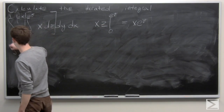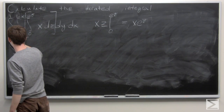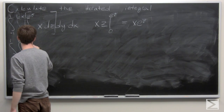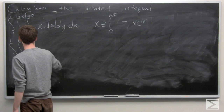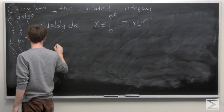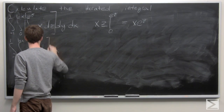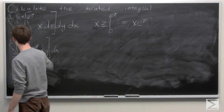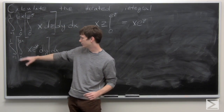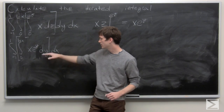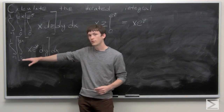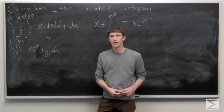So we can go ahead and write this as the integral from negative 1 to 1, and then the integral from 0 to ln x of x·e to the y dy dx. So we're going to take the integral from 0 to ln x of x·e to the y dy.